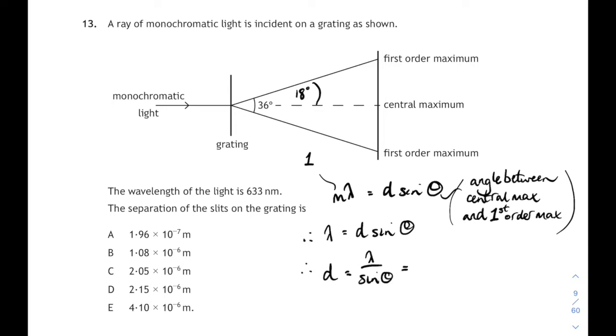So d will be lambda over sin theta. That's 633 times 10 to the minus 9 divided by sin 18. If you do that on your calculator, you're going to get an answer of 2.05 times 10 to the minus 6 meters. That corresponds to answer C.